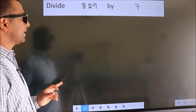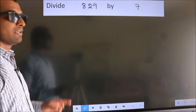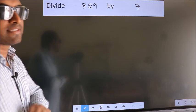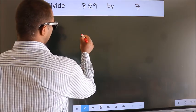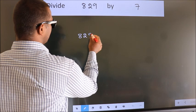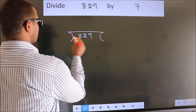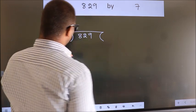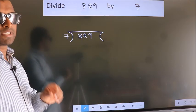Divide 829 by 7. To do this division, we should frame it in this way: 829 here, 7 here. This is your step 1.